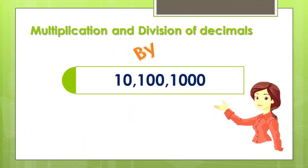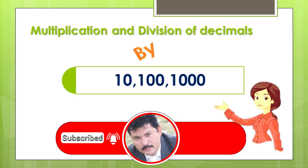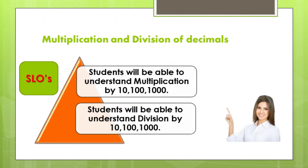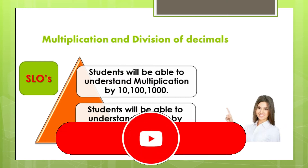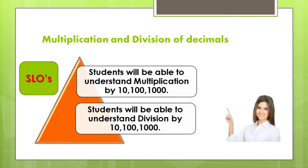Dear students, the special topic we will discuss in this entire lecture is multiplication and division of decimals by ten, hundred, and thousand. Now moving towards the SLOs of this topic. The first SLO is: students will be able to understand multiplication by ten, hundred, and thousand. The second SLO is: students will be able to understand division by ten, hundred, and thousand.